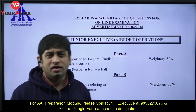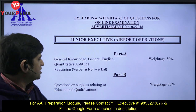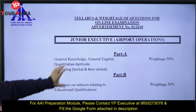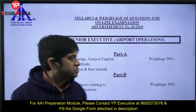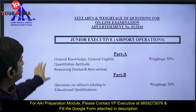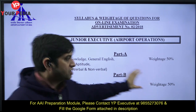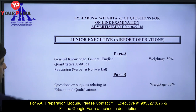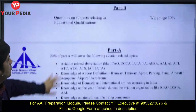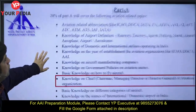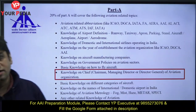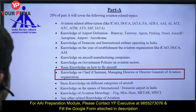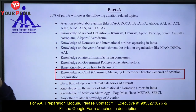The advertisement has come out and while no syllabus is mentioned, on the basis of the 2018 exam we are speculating the syllabus, which is more or less the same. For airport operations — one of the jobs — there is Part A and Part B. Part A has a weightage of 50% covering general knowledge and general English, and Part B has questions related to educational background. 20% of Part A will be from aviation-related topics.